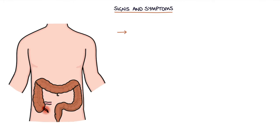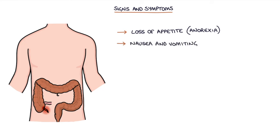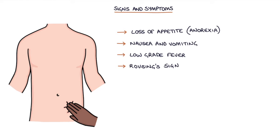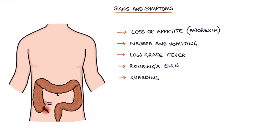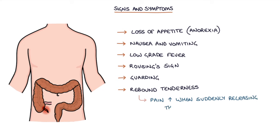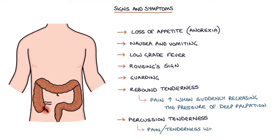Other classical features of appendicitis are loss of appetite, which we call anorexia, nausea and vomiting, a low-grade fever, Rovsing's sign — which is palpation of the left iliac fossa causing pain in the right iliac fossa — guarding on abdominal palpation, rebound tenderness in the right iliac fossa, where the pain increases when you suddenly release the pressure of deep palpation and the pain of releasing is worse than the pain of the actual pressure itself, and percussion tenderness, which is pain and tenderness when percussing the abdomen.